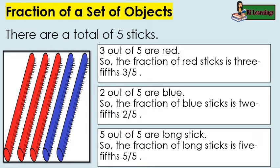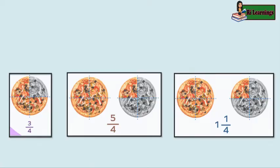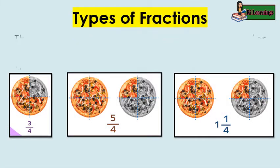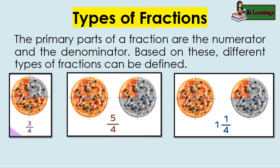Five out of five are long sticks, so the fraction of long sticks is five fifths. Types of fractions: the primary parts of a fraction are the numerator and the denominator. Based on these, different types of fractions can be defined. Let us look at some common types of fractions.